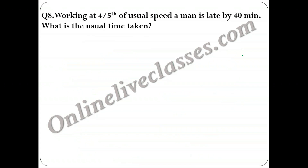Question 8: Working at 4/5th of his usual speed, a man is late by 40 minutes. Find the normal time taken. For a fixed distance, speed and time are inversely proportional. If speed becomes 4/5, then time becomes 5/4 of normal time t. The difference between the new time and normal time is 40 minutes: 5t/4 − t = 40.